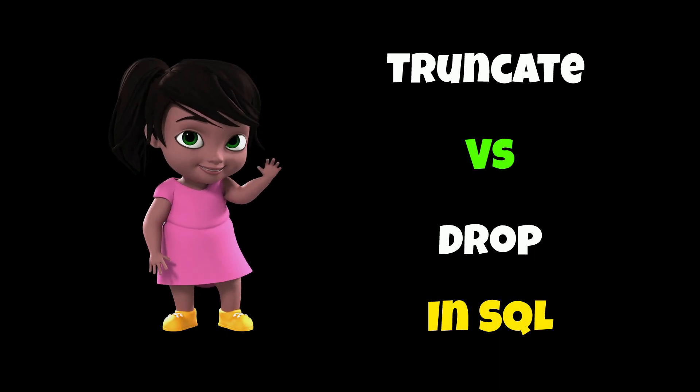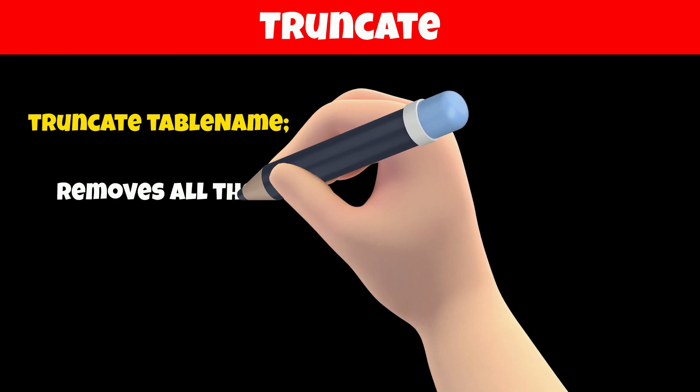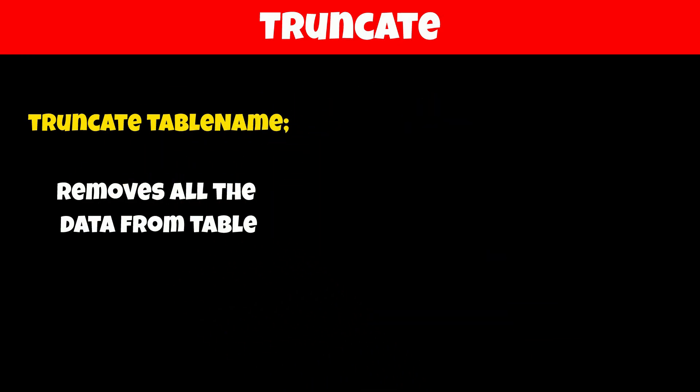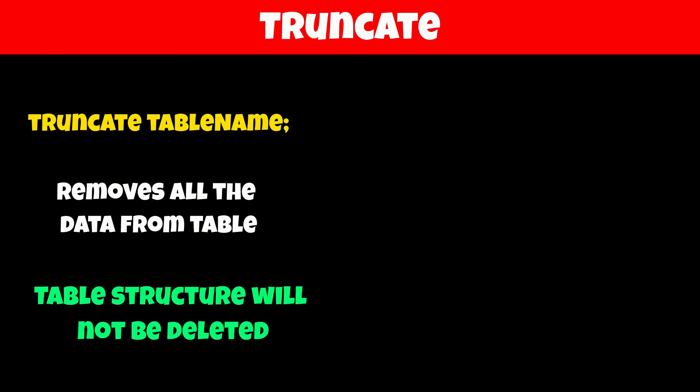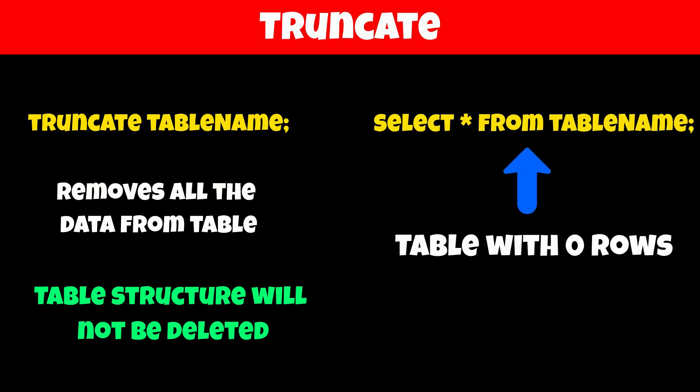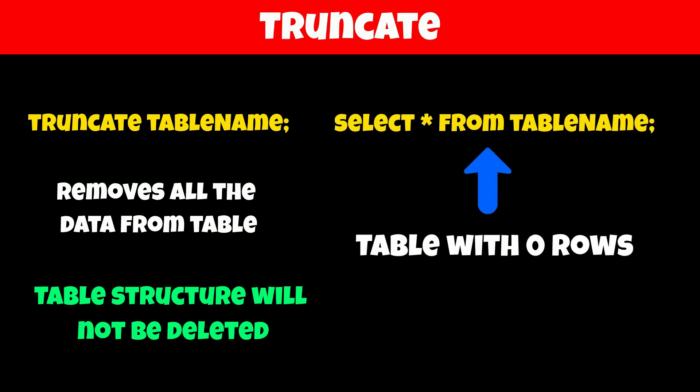What is the difference between the DROP and TRUNCATE commands in SQL? The TRUNCATE command is used to remove all the data or rows from the table. However, it does not impact the existence of a table, meaning the table structure will not be deleted. So the table with zero rows will still exist in our database.